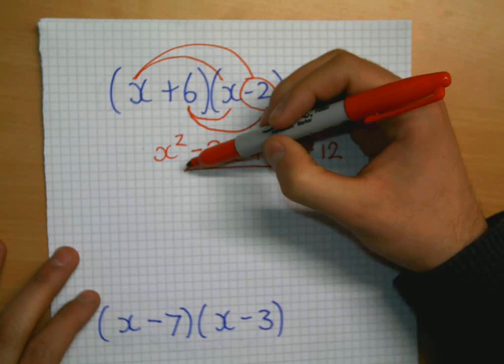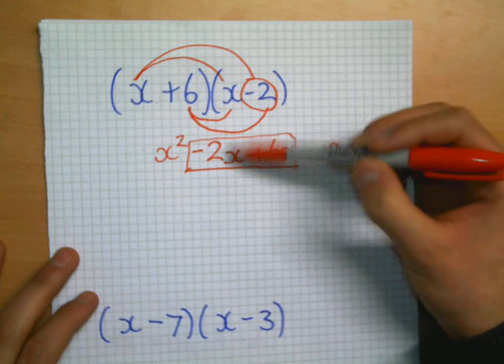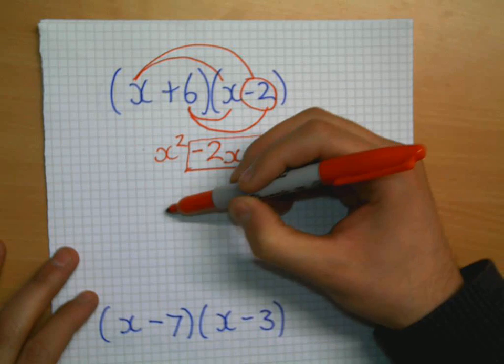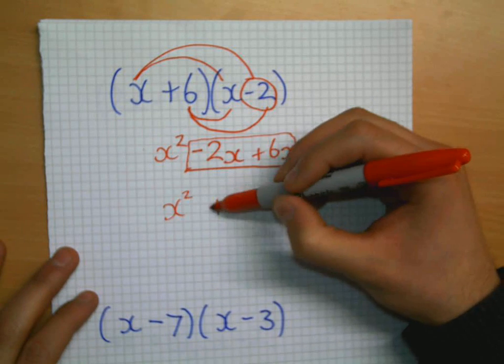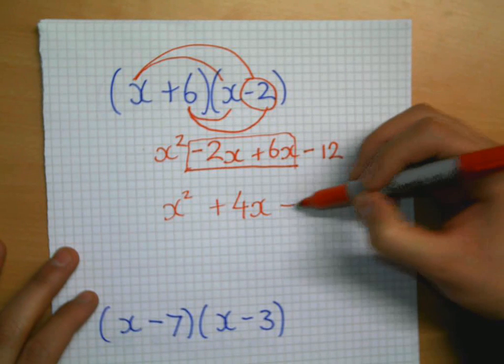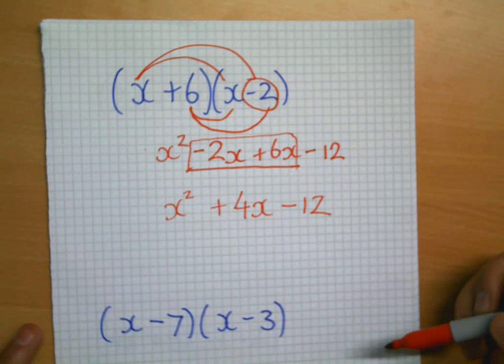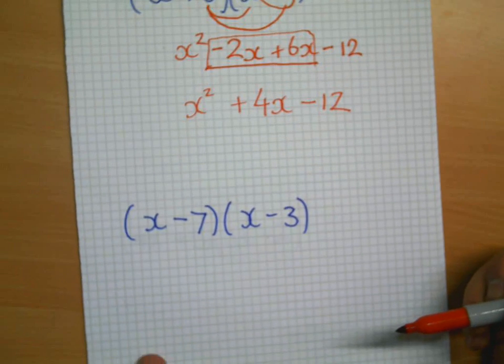Now, when we're collecting these like terms, we have to be careful. This is minus 2x add 6x. So, minus 2 add 6. That would be x squared plus 4x. Minus 2 add 6 is 4. Minus 12. That is our final answer with the like terms collected.